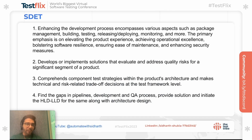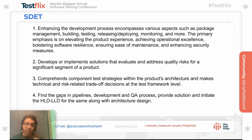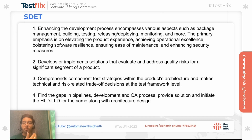First, let's understand what exactly an SDET does. SDET usually works to solve problems around both the development process and the QA process — that's where the main difference lies. Automation QA mostly involves solving problems around the QA process, like automating a test suite or designing a framework. But SDET focuses on both QA and development, figuring out the gaps in the development process and the pipeline.